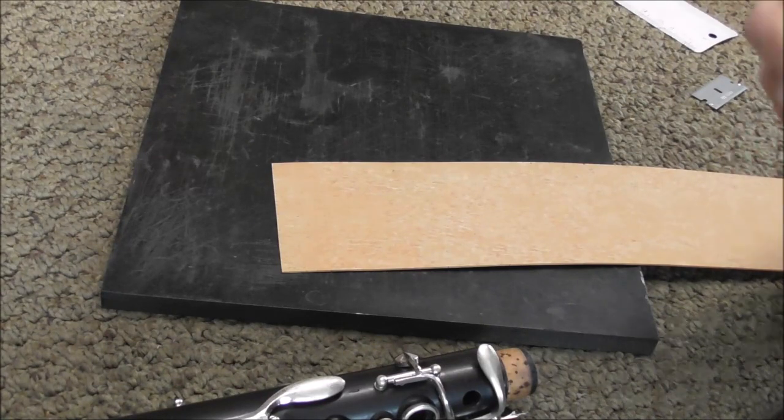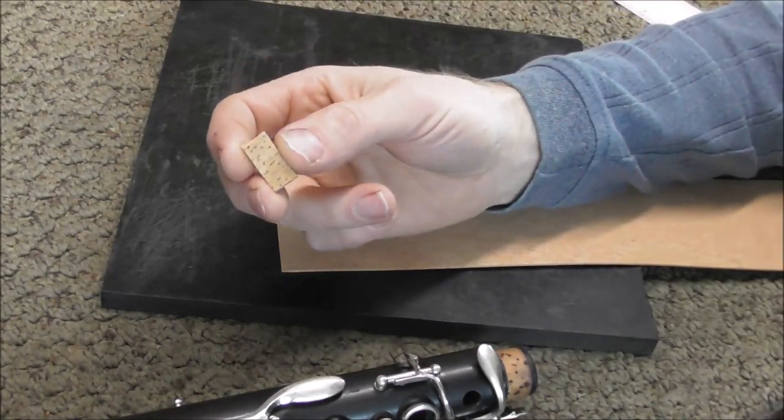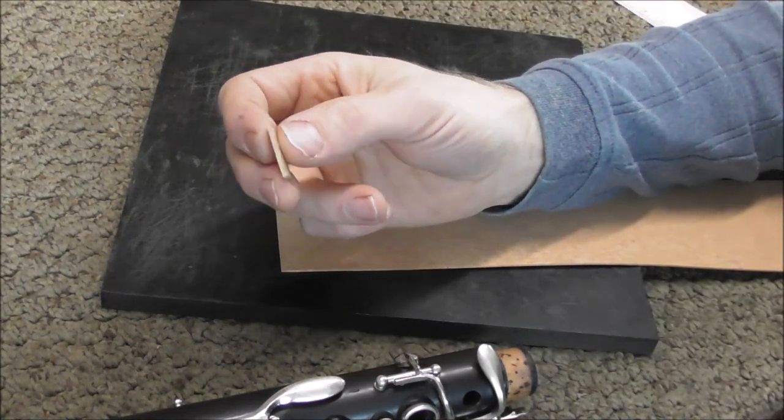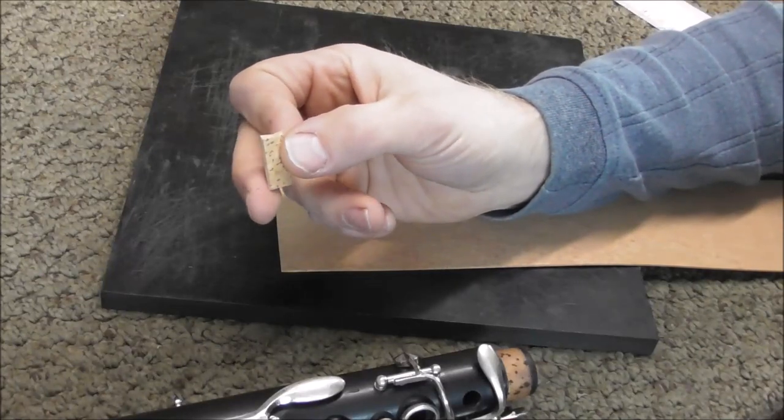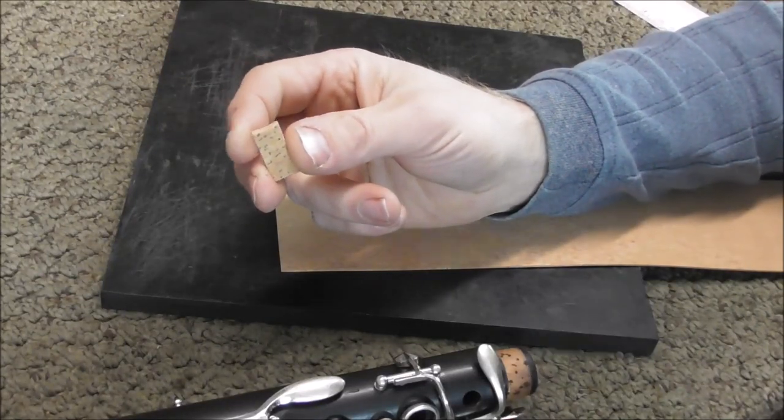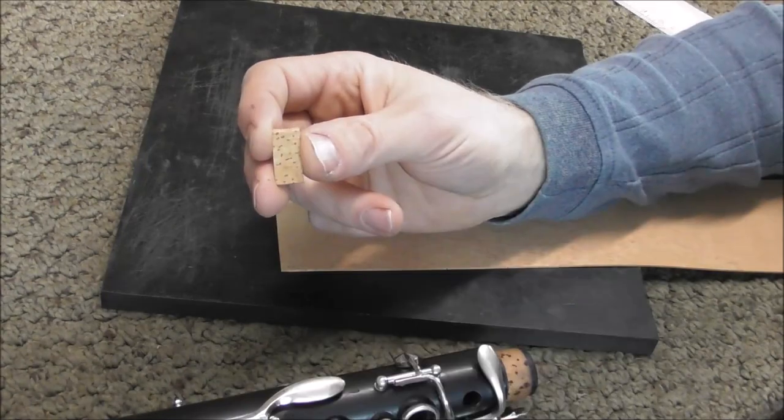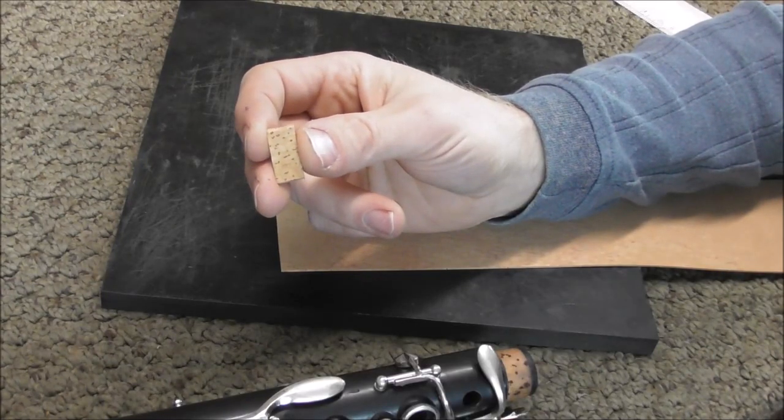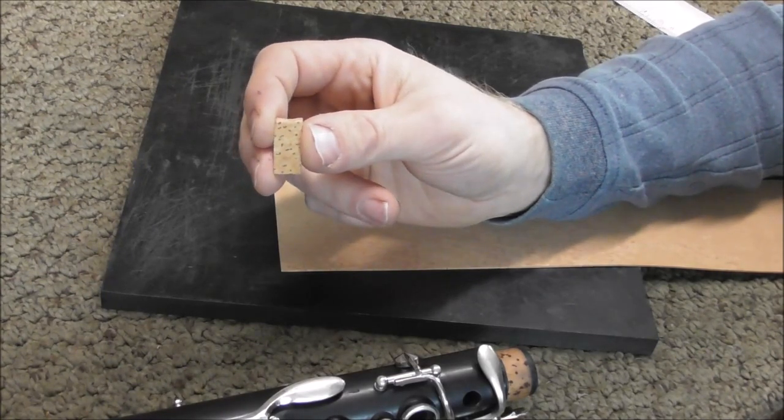If you do have any cork left over when you're doing tenon corks you can save it. This is a piece of tenon cork that I had left over and I use that for key corks, and also it already has glue on it so all I need to do is heat the key up and the cork will stick to it.